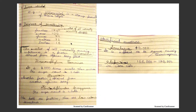Degree of sweetening: fructose has a degree of 170, sucrose 100, glucose 70, maltose 32, and lactose 16. Fructose is the sweetest of all naturally occurring sugars.